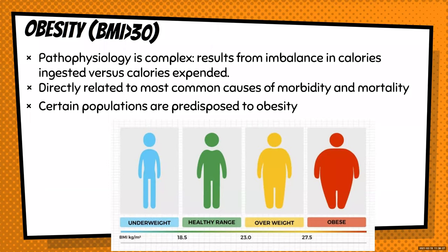The other type of malnutrition that people often don't think of is obesity, clinically defined as a BMI greater than 30. The pathophysiology is complex, but at the very basic level it results from an imbalance in calories in versus calories out. It is related to many common causes of morbidity and mortality, and certain populations are predisposed to it. This has now become its own diagnosis and disease, going beyond just heart attacks and high cholesterol to pathologizing body size — which is a complex issue. Just know for our purposes that obesity is also a form of malnutrition.